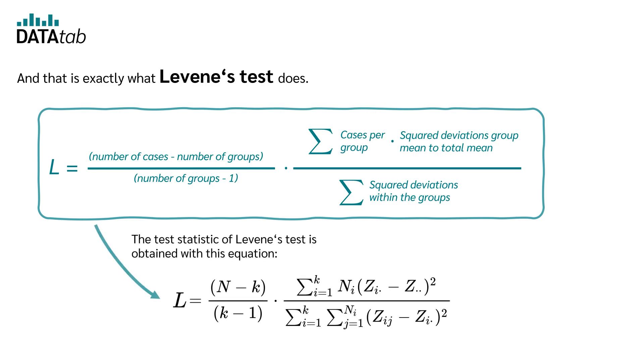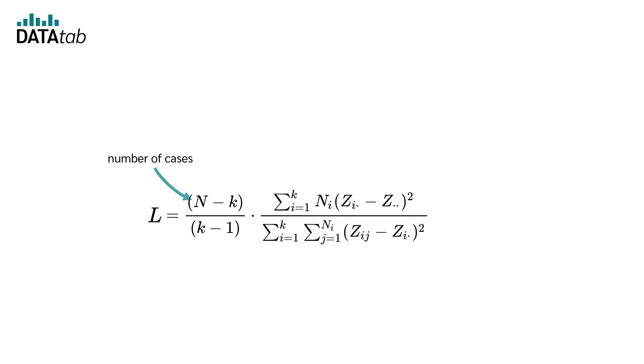The test statistic of Levene's test is obtained with this equation. N is the number of cases, n_i the number of cases in the i-th group, z_i is the mean value of the i-th group, z is the overall average, z_ij is the respective value in the groups and k is the number of groups.